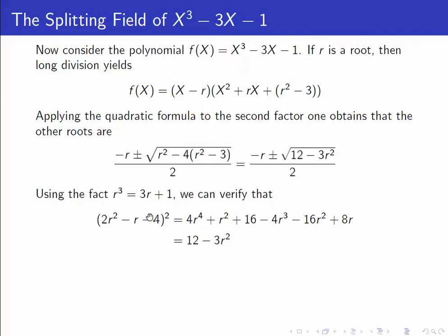But let's just prove that it is by evaluating 2r squared minus r minus 4 squared. And a simple calculation combined with the fact that r cubed minus 3r minus 1 is 0 gives us that this is equal to 12 minus 3r squared. So this gives us an expression for these roots.